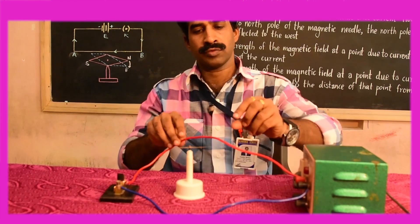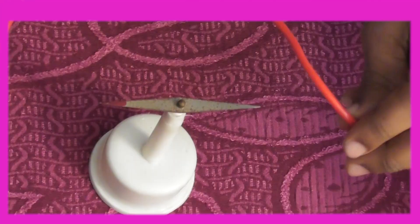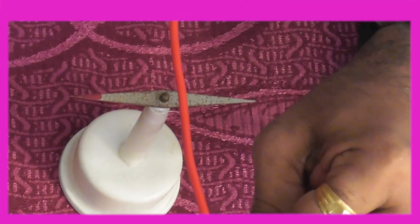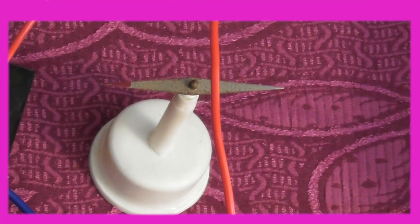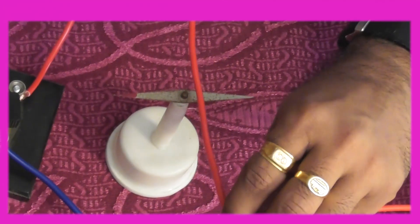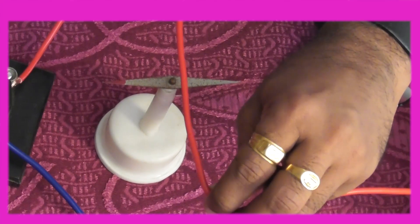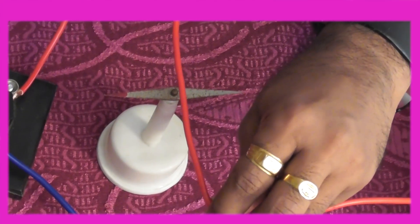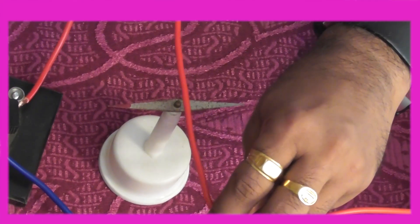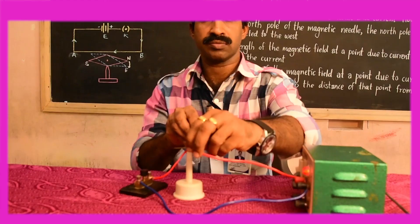If the current flows from east to west, then there will be no deflection. You may just check — the flow of current is from east to west and hence there is no deflection in the magnetic needle.